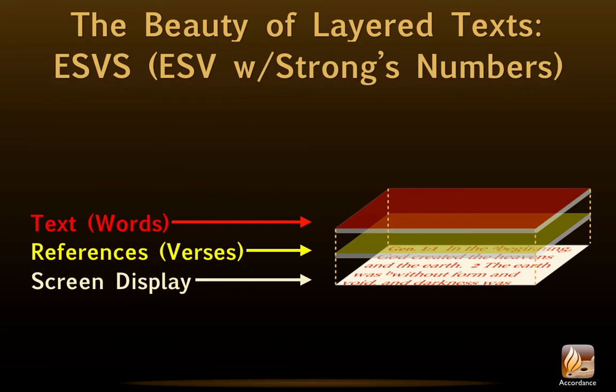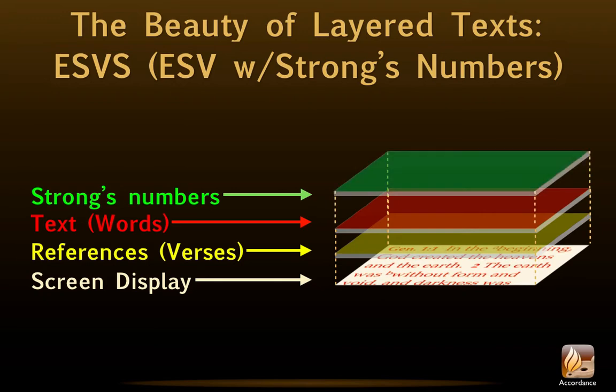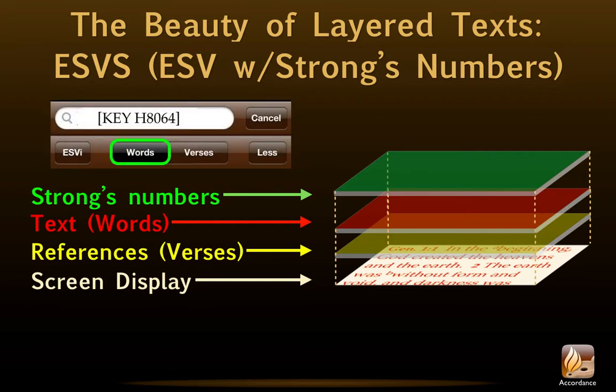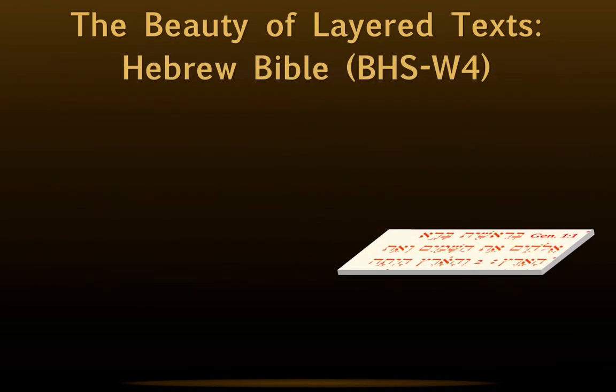When we select search by word, we are searching the first layer. When we search by verse, we are searching the other. Numerically tagged texts, like the ESV-S, have an additional layer. Words are tagged with Strong's numbers, which enable users to identify the original Hebrew or Greek behind each word. That's what the final S in the module's abbreviation stands for. These numbers can be searched directly using the key command, even if the words are translated differently in some places.